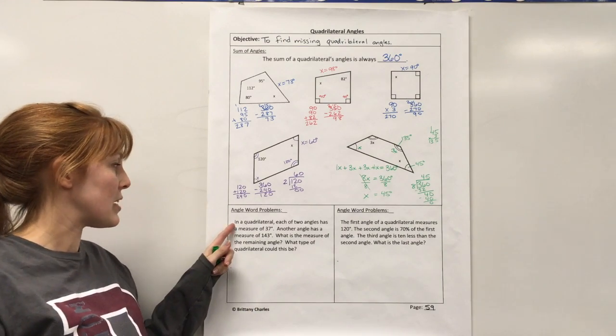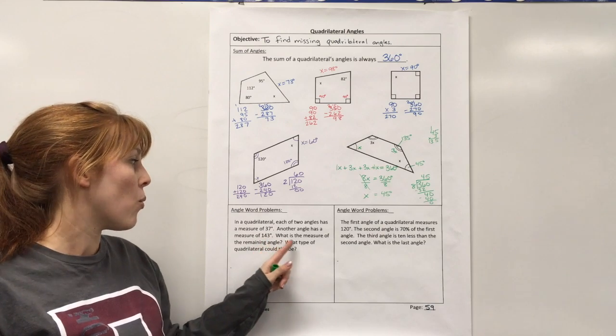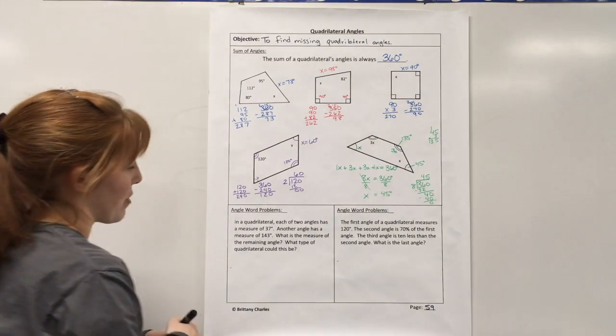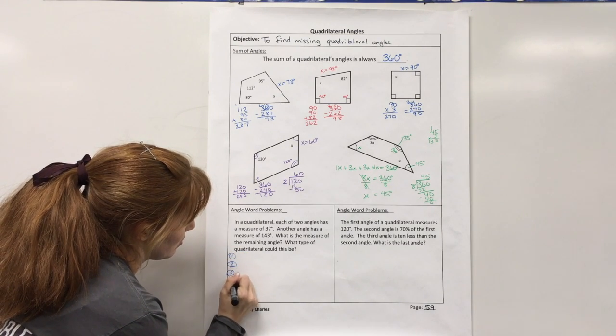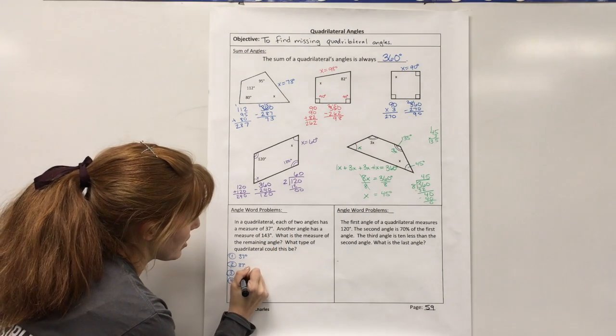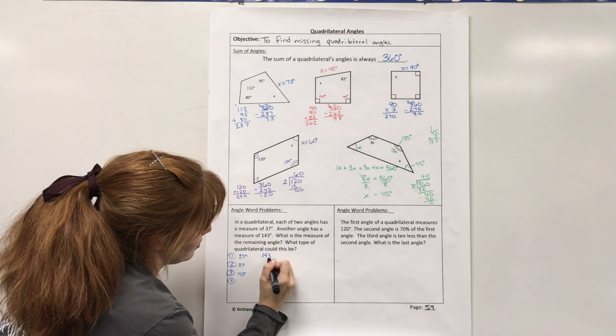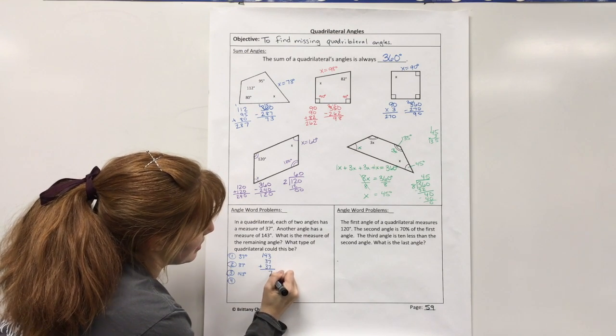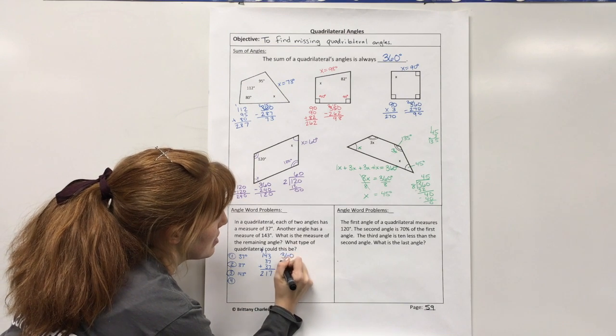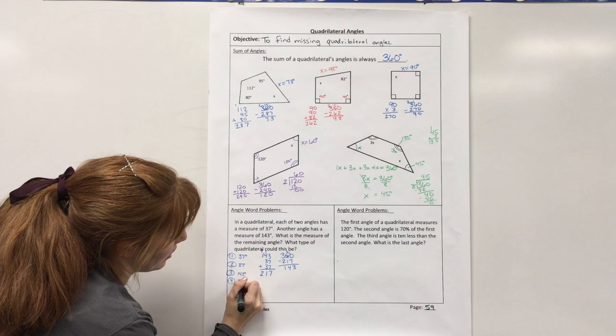All right, two more problems, and now we have some word problems. So let's see. In a quadrilateral, each of two angles has a measure of 37 degrees. Another angle has a measure of 143 degrees. What is the measure of the remaining angle? And what type of quadrilateral could this be? All right, so first of all, let's list these out. We have four angles: 37, another 37, one that's 143, and then this is what I need to find. So let's add first: 37 plus 37 plus 143 equals 217. And then 360 minus 217 equals 143. So we have this last angle has to be 143 degrees.